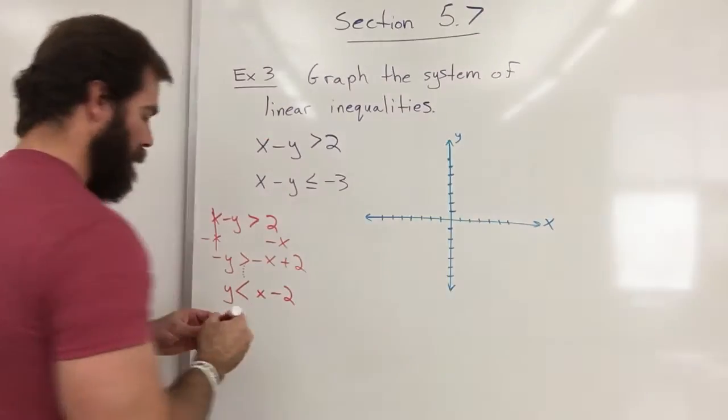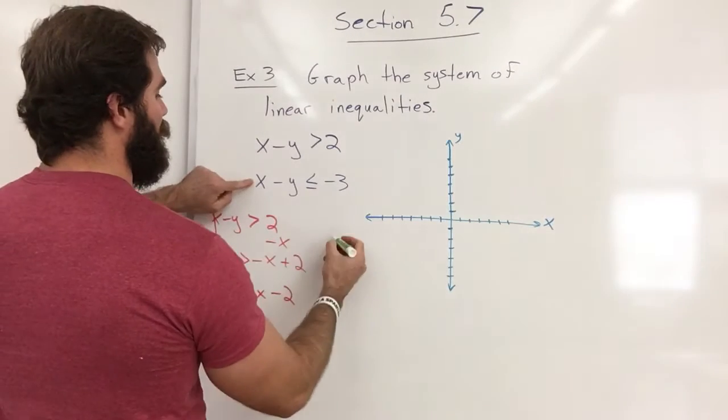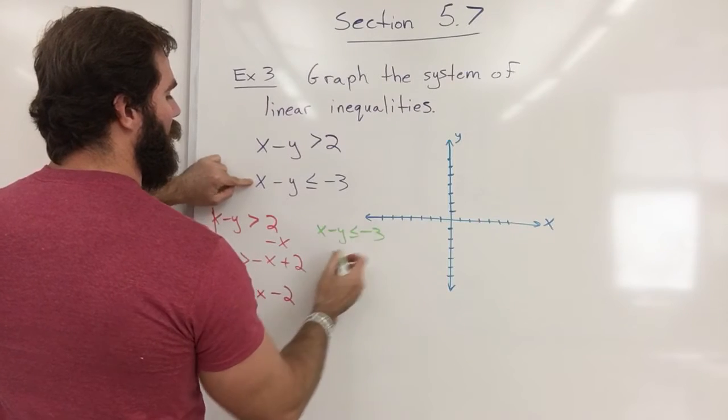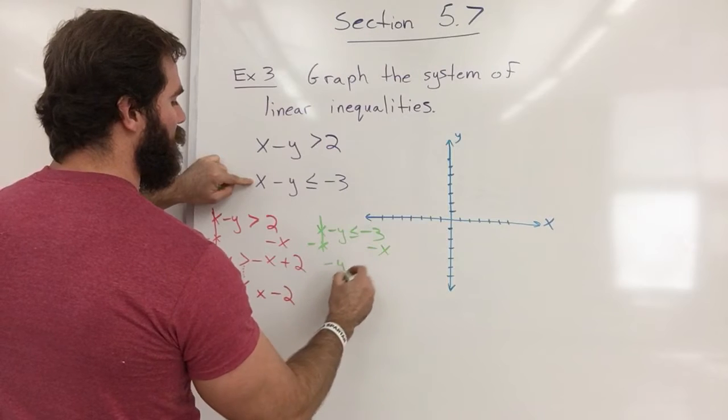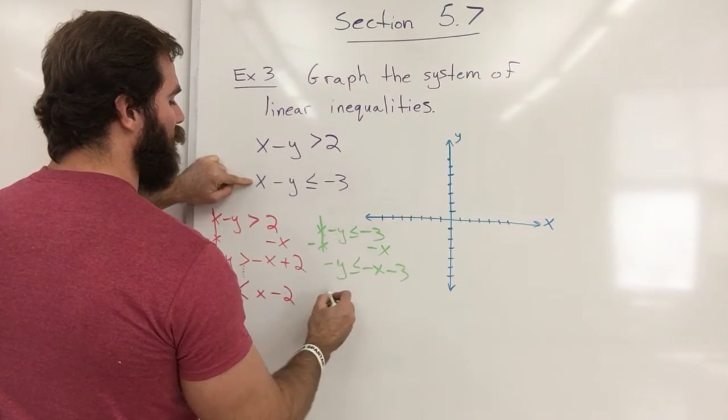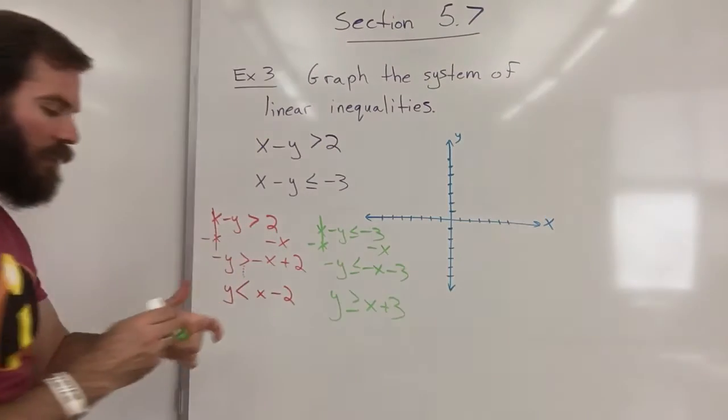All right and let's do this one next. I will subtract x on both sides and multiply everything by a negative 1 to put everything opposite. Now I'm ready to graph.